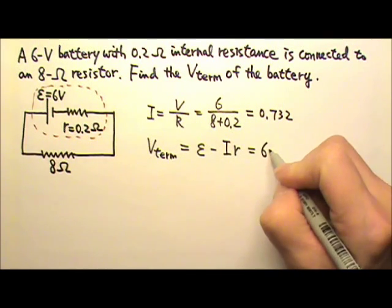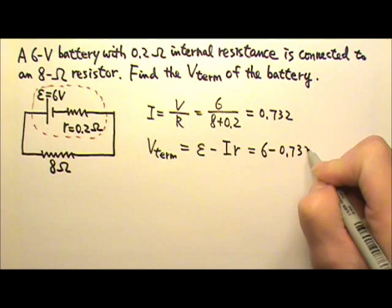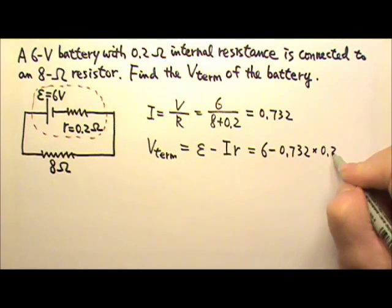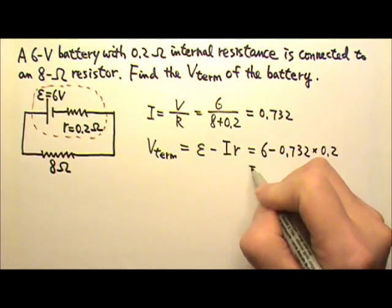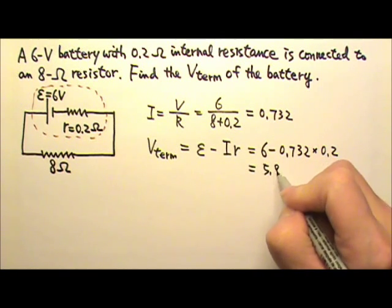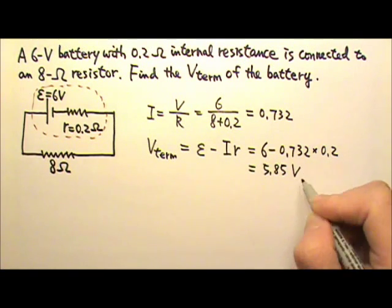EMF is 6. The current is 0.732. The internal resistance is 0.2 ohms. So the terminal voltage is 5.85 volts. And that's the answer.